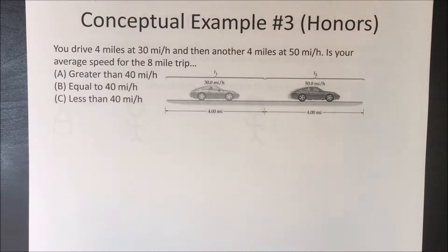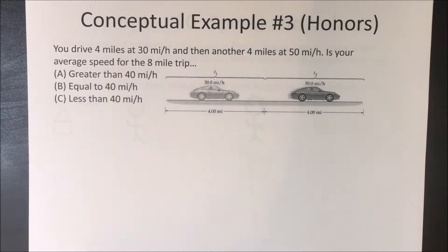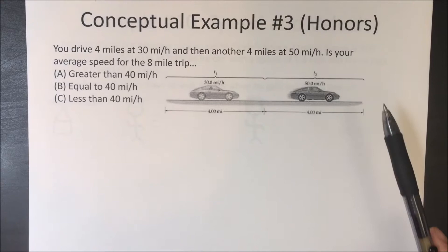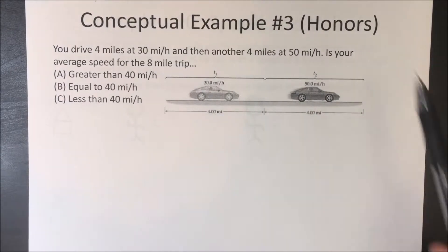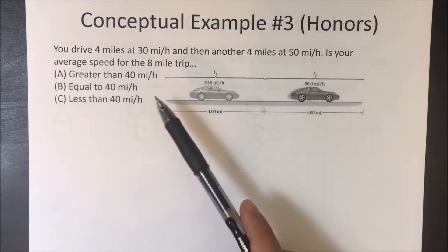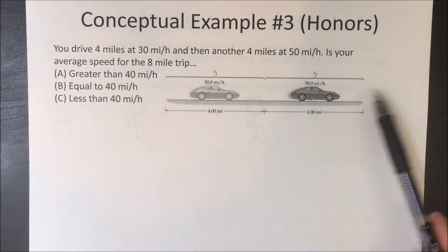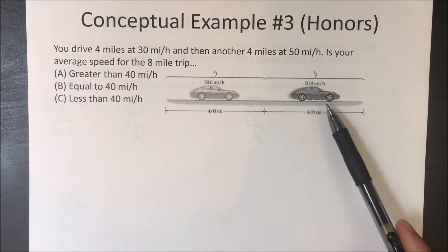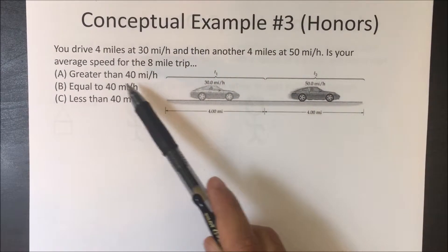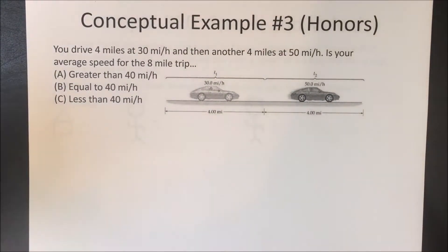This is fairly difficult to think about. Almost everyone's natural instinct is: if you're going 30 miles an hour for 4 miles and then 50 miles an hour for 4 miles, then it should be equal to 40 miles an hour. But that is not correct.